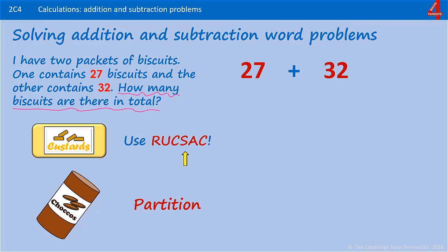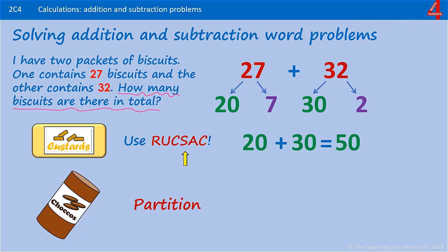To partition 27, we have 20 and 7. And partitioning 32, we have 30 and 2. Adding the tens: 20 add 30, that's 50.